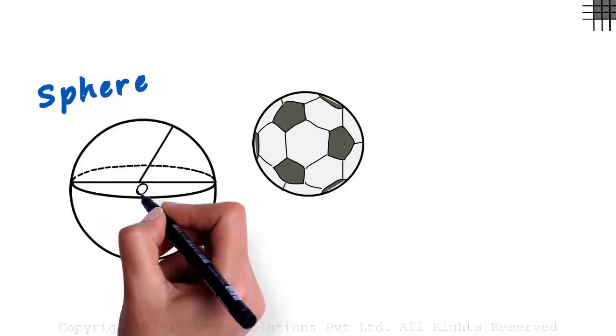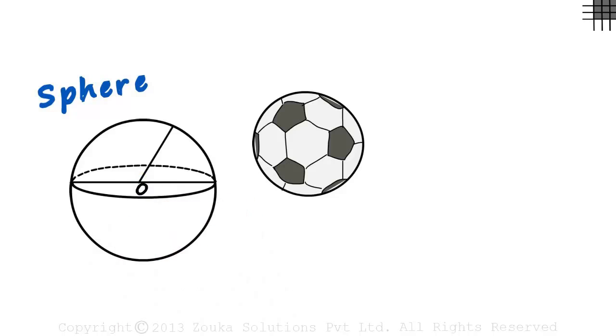Let's call it O. Another important thing we need to know about the sphere is that all points on the surface are equidistant from its center.